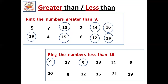Now 12. Is 12 a big number or small number compared to 16? 12 is a small number — 12 is less than 16, so we should circle it. Now 8. Is 8 a big number or small number compared to 16? It is a small number — 8 is less than 16, so we should circle it. Now 20. Is 20 a big number or small number compared to 16? 20 is a big number, so we should not circle it.